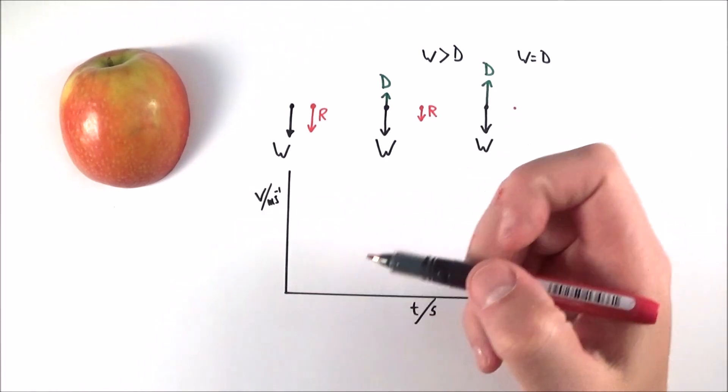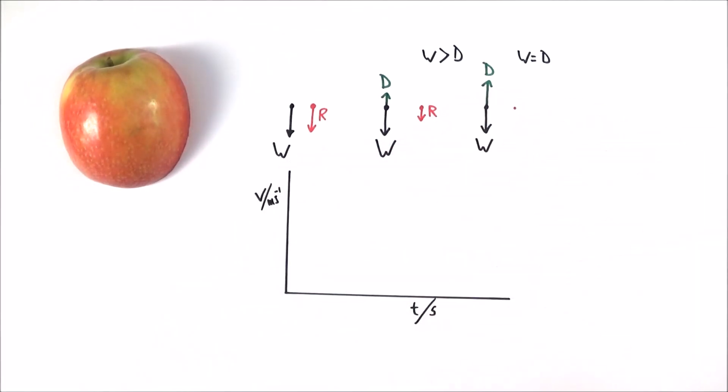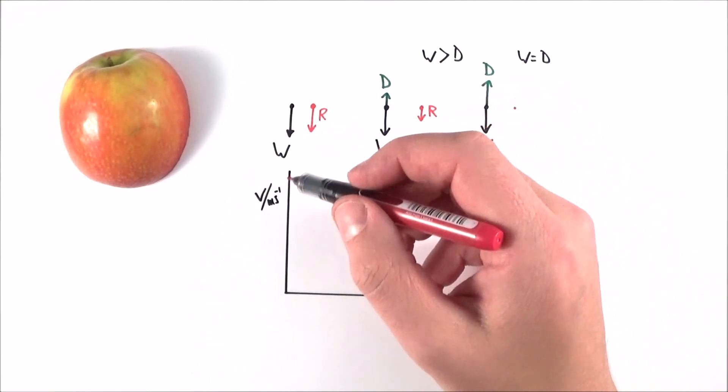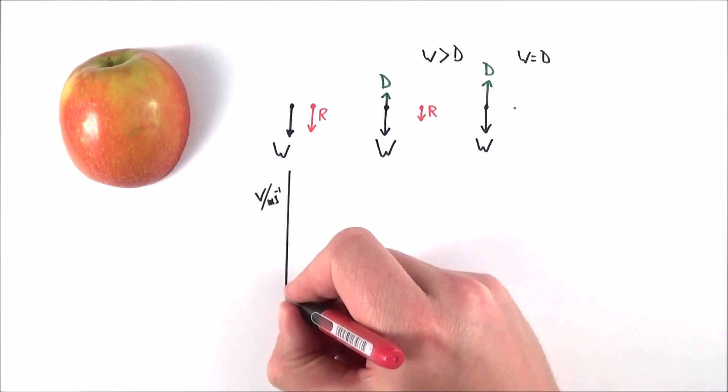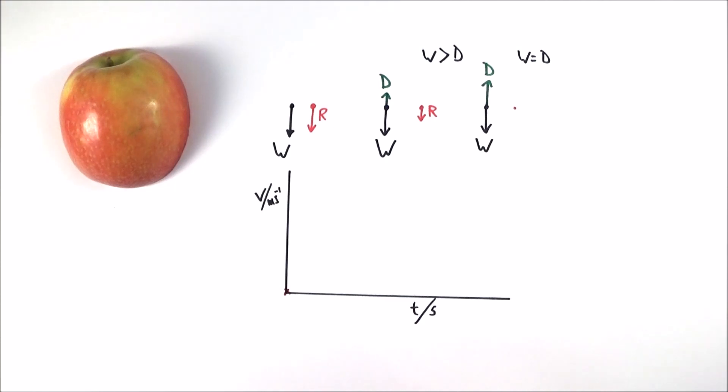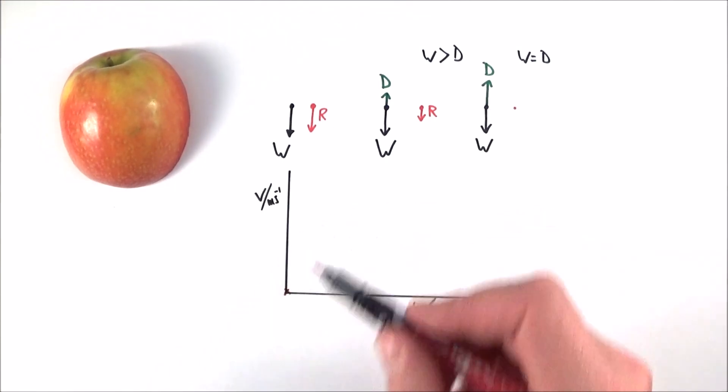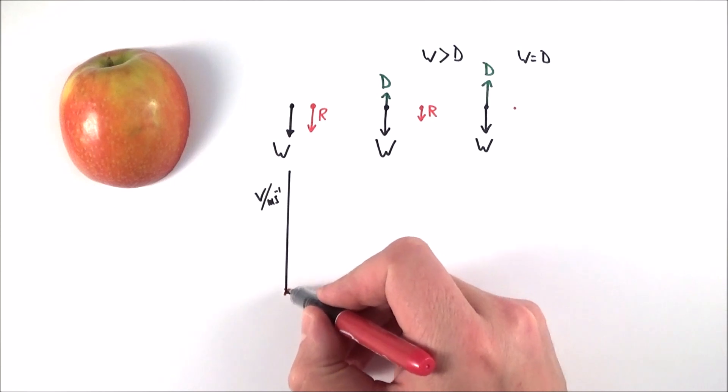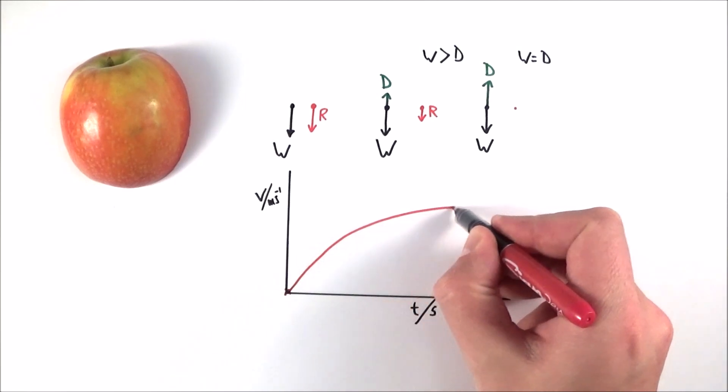We can also look at this in a sort of graphical way where I'm going to use a v-t graph. Effectively, at time zero there's no velocity when it initially starts to move off. As time goes on though, the velocity gets bigger and bigger and bigger, and what we get is a graph that looks a bit like this.